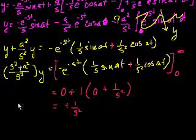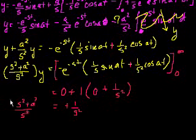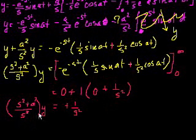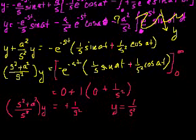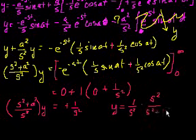Anyway, so now we have s squared plus a squared over s squared times y is equal to this. Multiply both sides times s squared over s squared plus a squared, divide both sides by this. And we get y is equal to 1 over s squared times s squared over s squared plus a squared. And then these cancel out. And let me make sure that I haven't made another careless mistake, because I have a feeling I have.